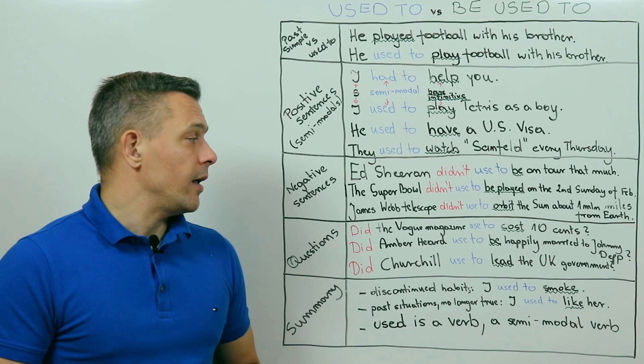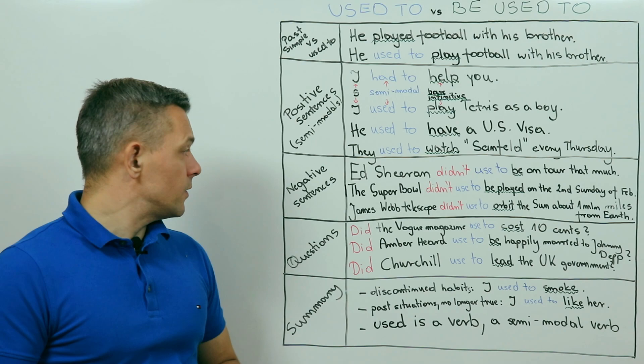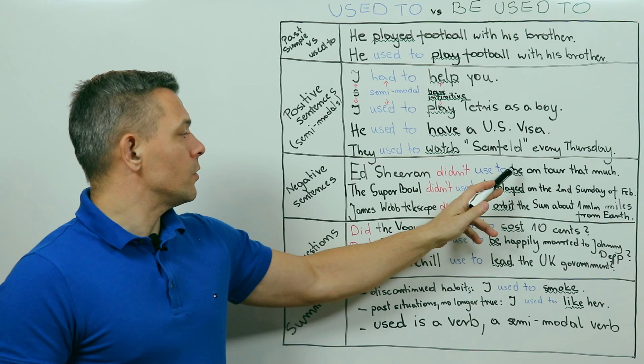Okay, so let's sum up negative used to sentences: auxiliary didn't, used to, no D, and another verb in its bare infinitive form.